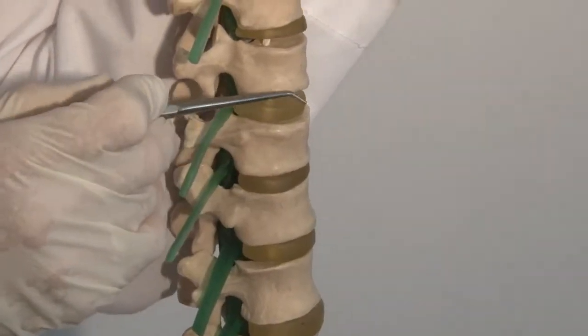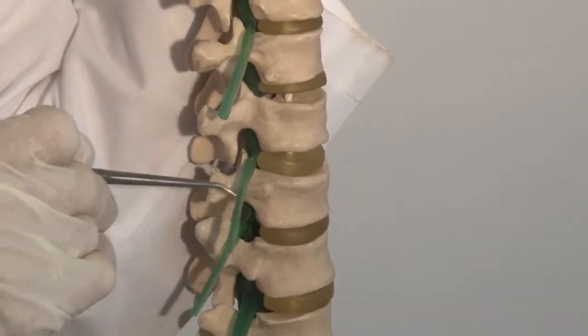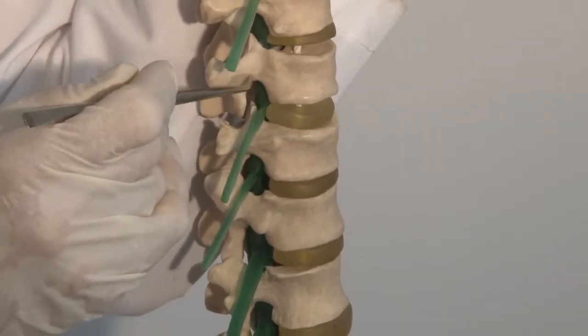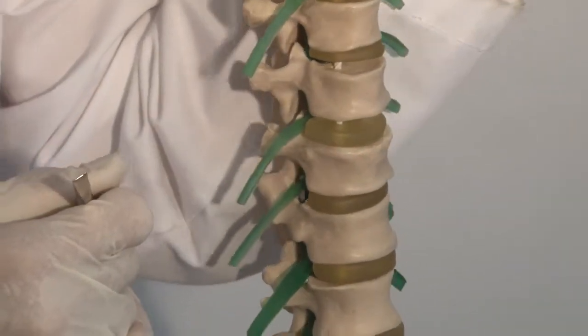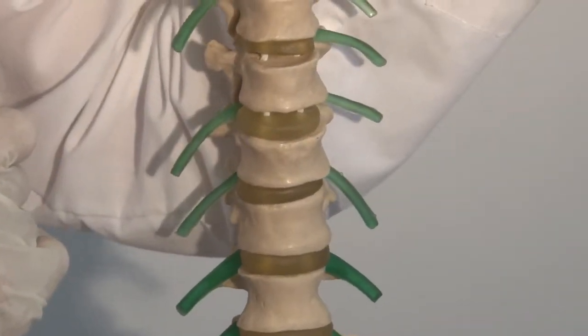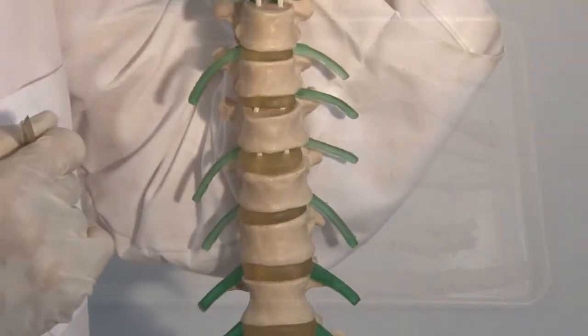So the relationship between the vertebral column, the discs, the emergence of the nerves, and the foramina through which they emerge is very important. Now let's look at a gross specimen of the spinal cord.